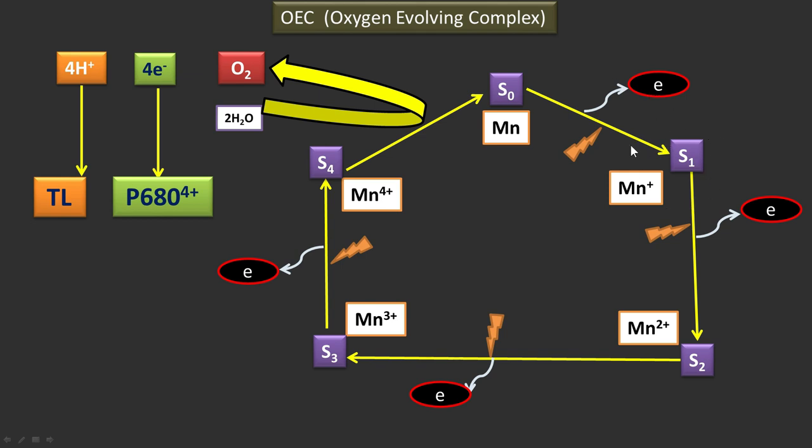In this condition, Mn gave its electron to P680+ and it becomes P680. At that point in darkness, the state was S1 state. So already it has released one electron.